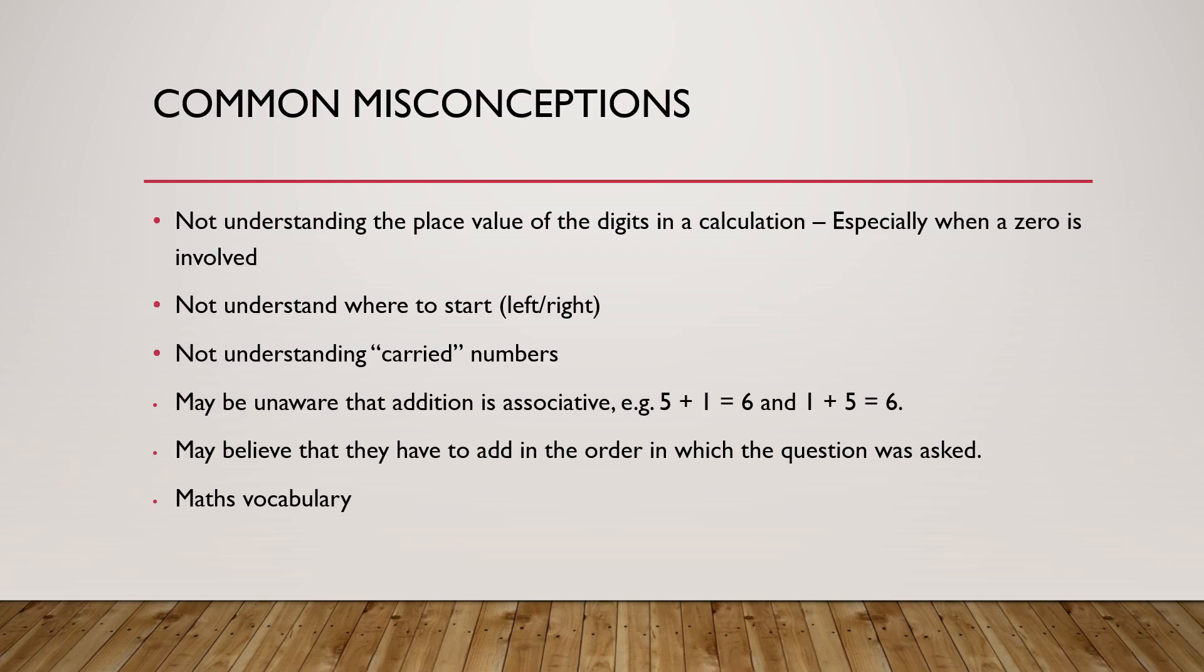The most common place where people lose marks in this particular topic is not understanding the place value, especially when there's a zero involved. Not understanding exactly where to start from an addition—do I start from the left or the right? Not understanding how to carry numbers. Not knowing that addition is associative. So what this means is if I'm doing 5 plus 1 equals 6, 1 plus 5 is also 6. Many believe that you have to add the numbers in the order that the question is in. However, addition is associative, so you are able to put whichever number you wish first.